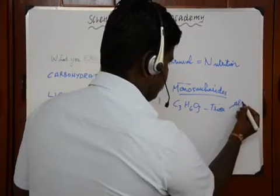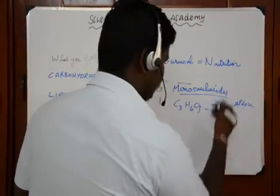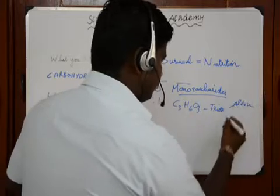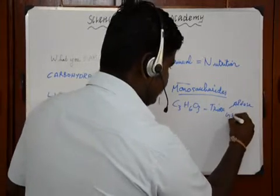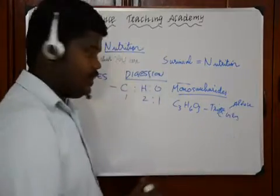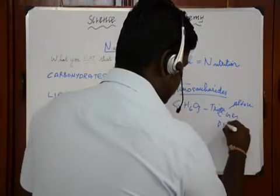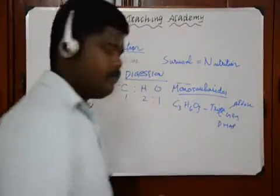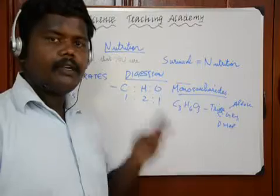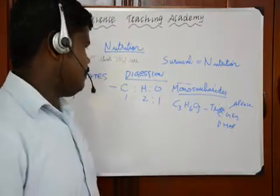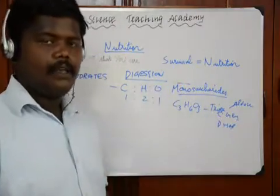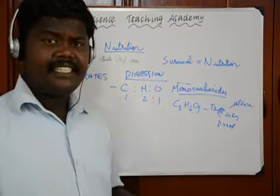Trioses differ in whether they are an aldose or a ketose. For example, glyceraldehyde is an example of a triose aldose. Dihydroxyacetone phosphate is an example of a ketose — a three-carbon ketose with a keto group. This is how monosaccharides are classified.